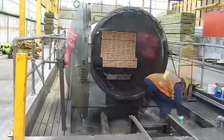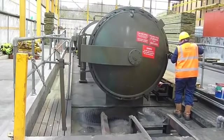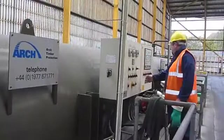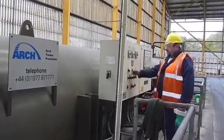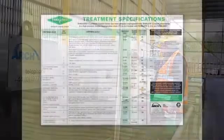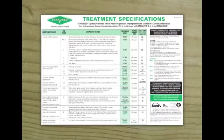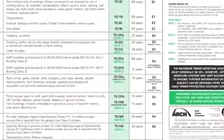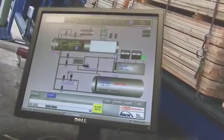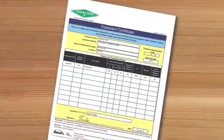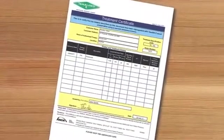Depending upon the treated timber's eventual end use and the timber species being used, the plant operator will have determined specific treatment requirements to ensure an appropriate and effective level of protection is applied. This involves the choice of a particular treatment cycle in terms of the pressure applied and the treatment period. Treatments are usually computer controlled to ensure consistency, and the control systems generate documentation of each treatment to give traceability if required.